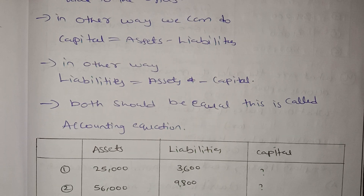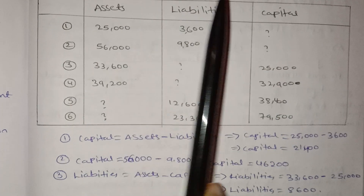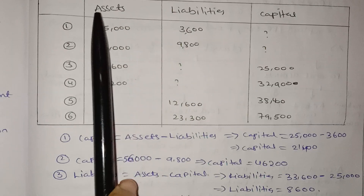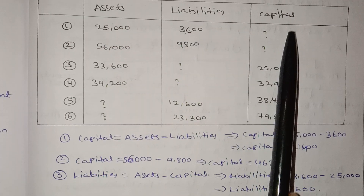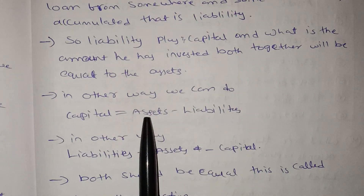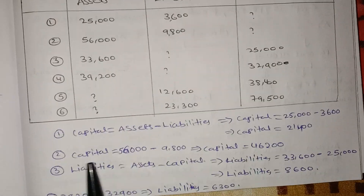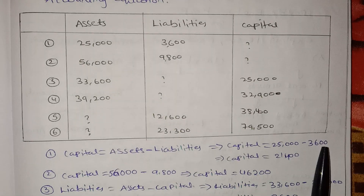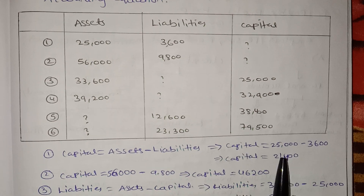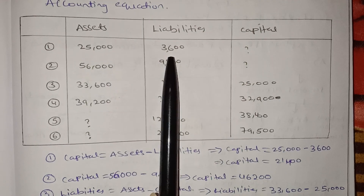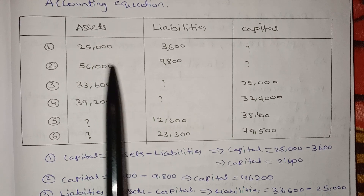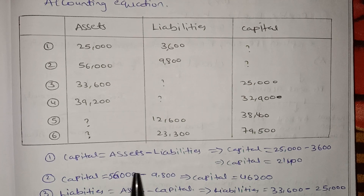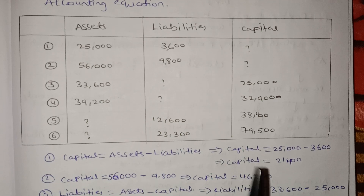Now let me give an example. Capital equals Assets minus Liabilities. So we can write: Capital equals Assets minus Liabilities. Assets 25,000 minus 3,600 equals 21,400. Another example: Capital equals 56,000 minus 9,800 equals 46,200.